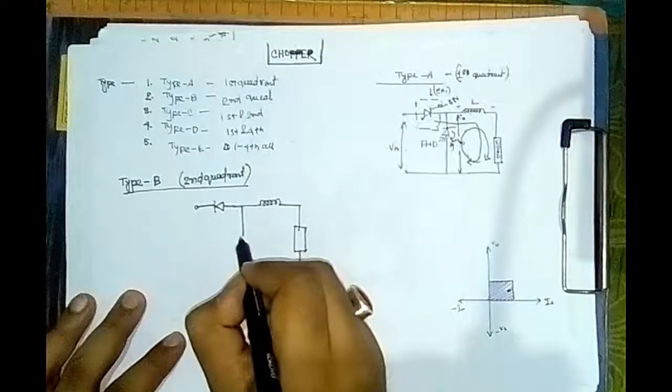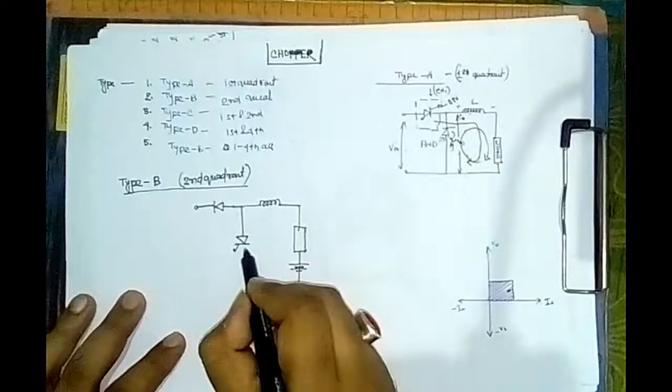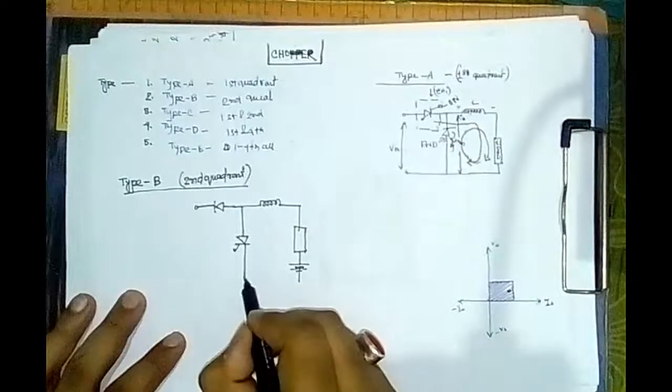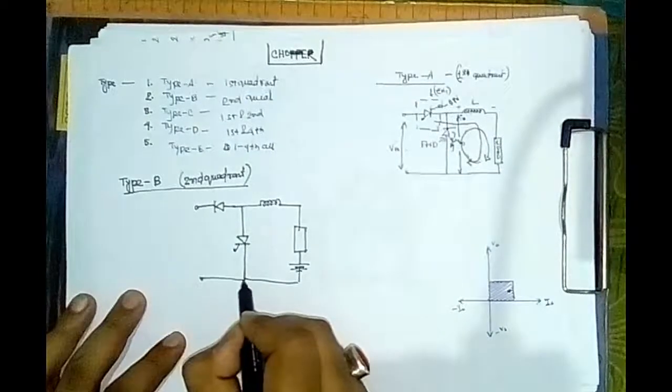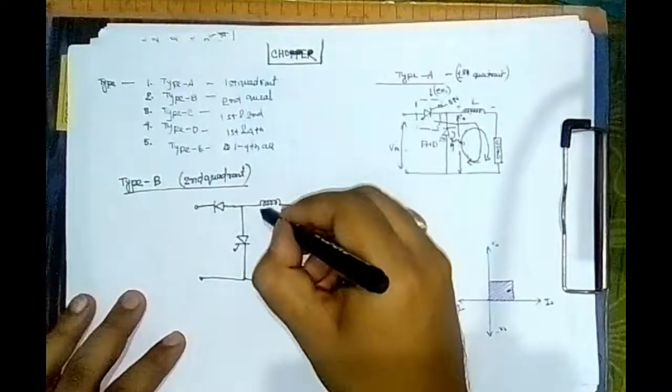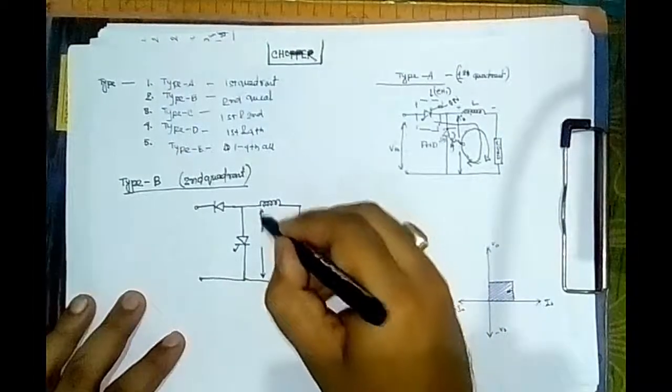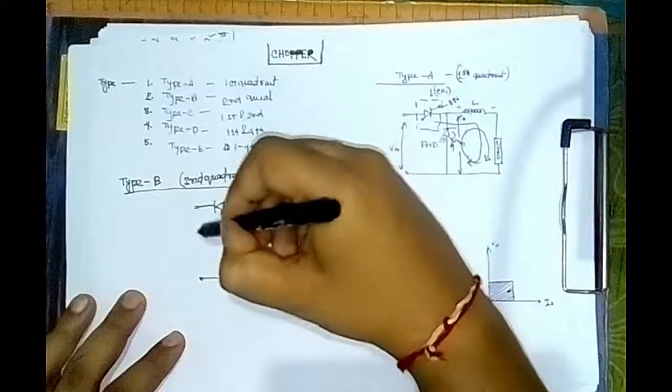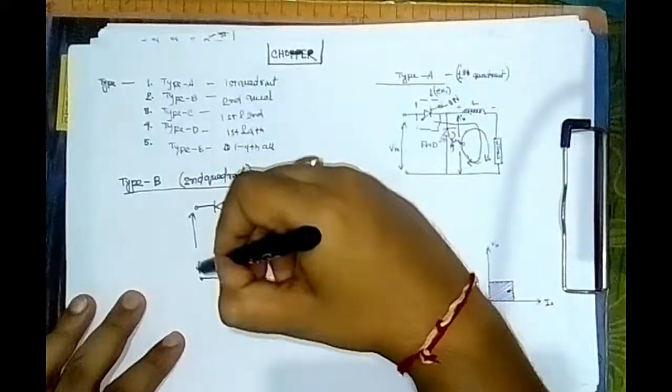Here we are using a thyristor, and that is all. From there we will get an output voltage, and from here we are giving an input DC voltage.